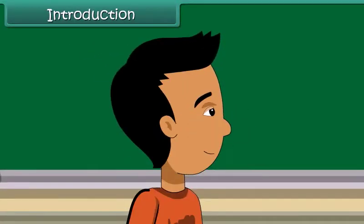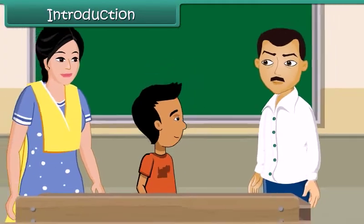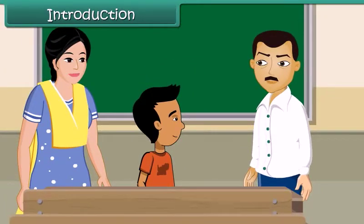Ramesh is a bright boy, eight years of age. He studies in a government school. Today he has accompanied his mother to the parent-teacher meeting. The teacher has one complaint: Ramesh takes leave frequently. As a result, his class and homework are incomplete. If he continues to be irregular at school, he may have to repeat the class.